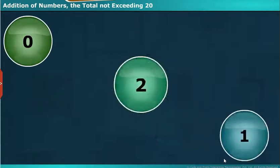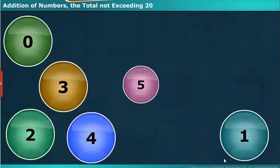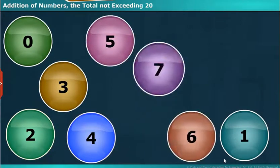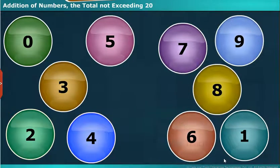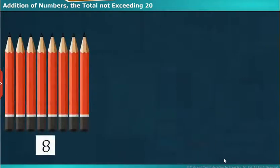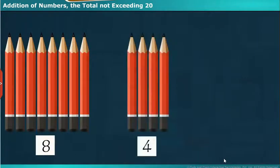We have known how to add numbers 0 to 9. Now here we learn how to add the numbers 10 to 20. There are 8 pencils in first row and 4 pencils in second row. Now 8 plus 4 is